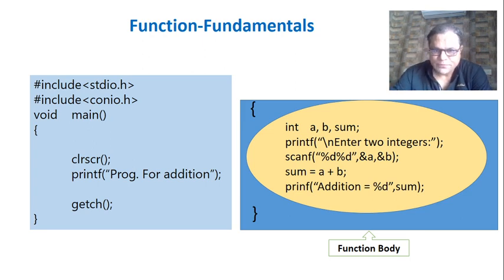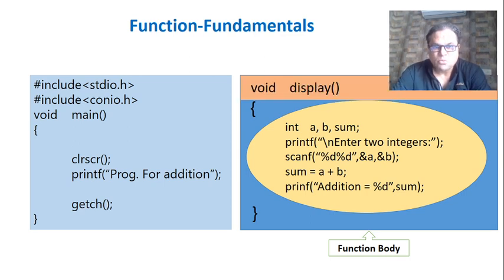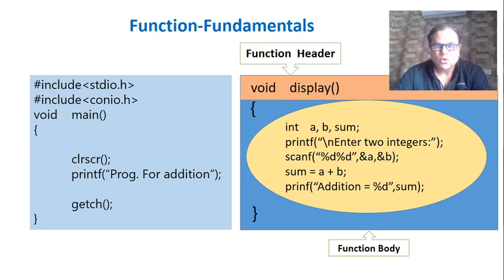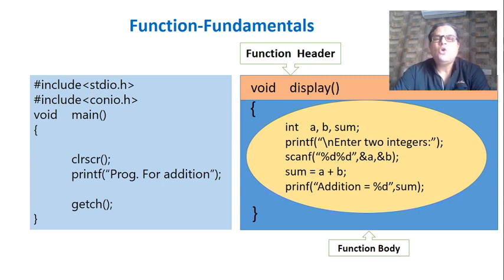A function body must have a header. We must have one more line above the function body where we specify the return type of the function — that is void — and the name of the function — that is display. This line is known as the function header, which is the second term. The function header along with the function body together is called the function definition — that is the third term.